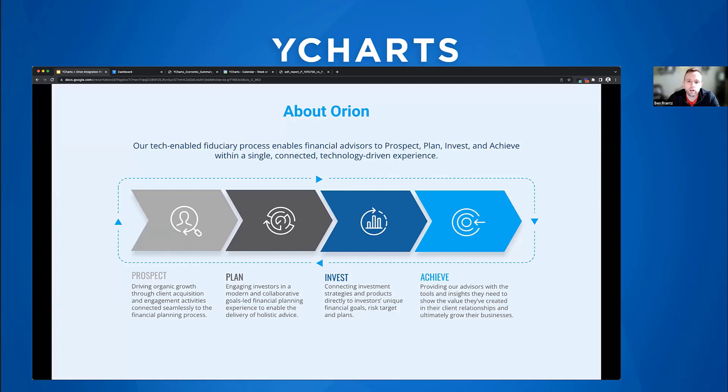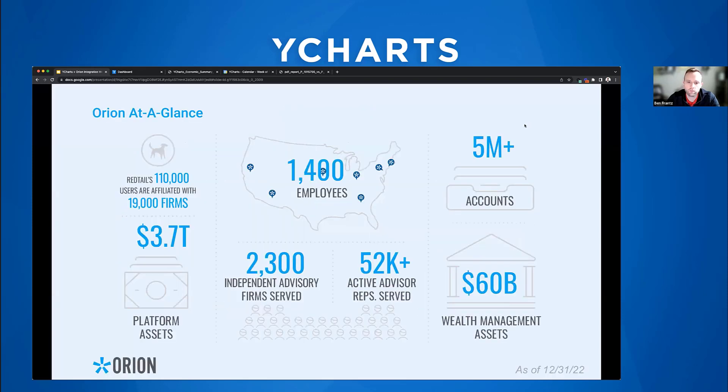Under the Prospect pillar, we have CRM tools within Orion including Redtail, plus marketing tools to help drive client engagement. The Plan pillar uses the Orion planning tool. The Invest pillar covers third-party wealth management arms like Orion Portfolio Solutions, Townscore Capital, as well as managing assets in-house — including the integration with YCharts, which we'll touch on today. Finally, the Achieve pillar focuses on operational efficiency to free up your staff to spend more time with clients.